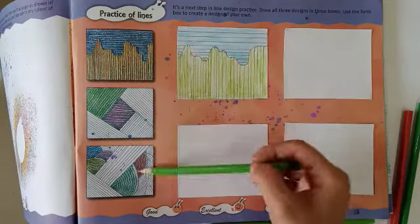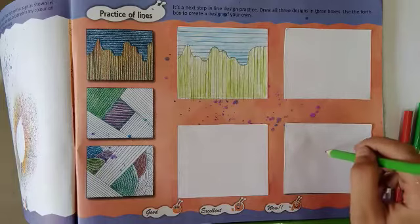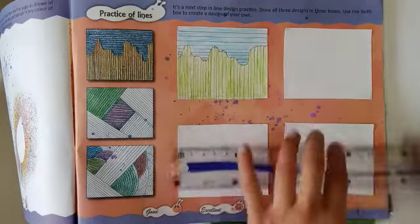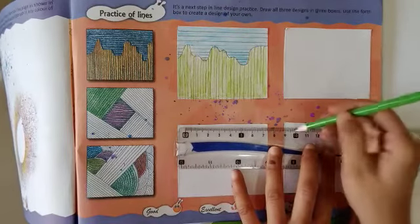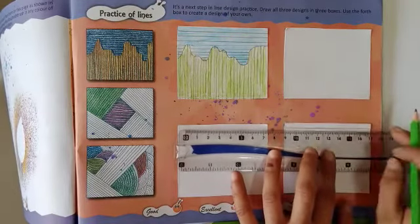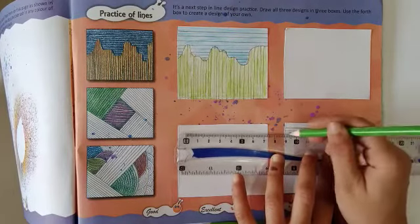You will copy these two designs in these boxes. In the fourth design, you will make your own design with vertical lines and different lines: vertical, horizontal, diagonal, and curved lines. We will make a design like this.